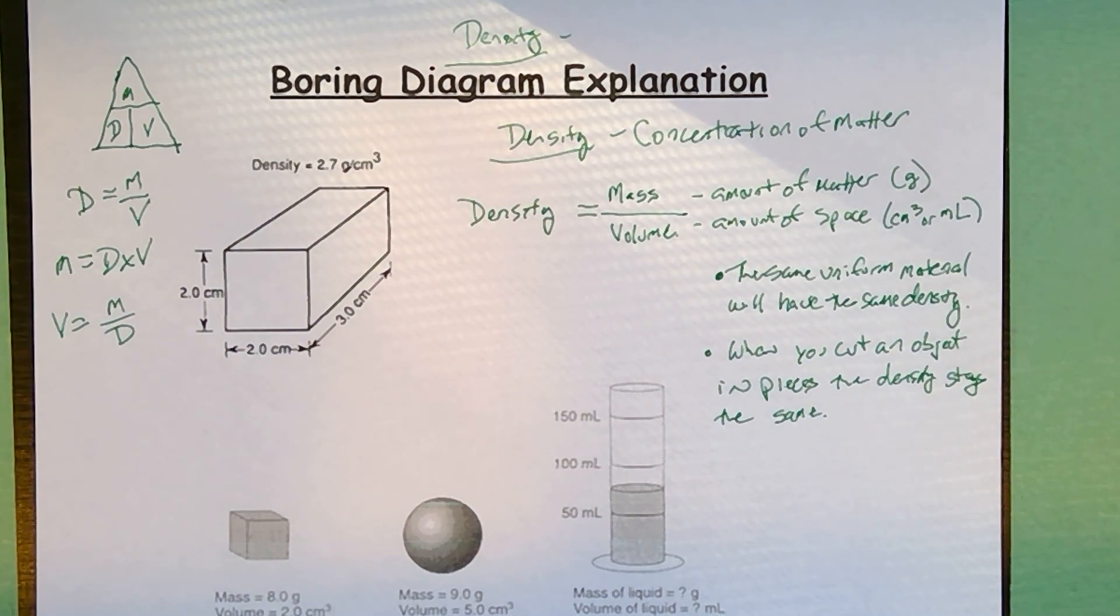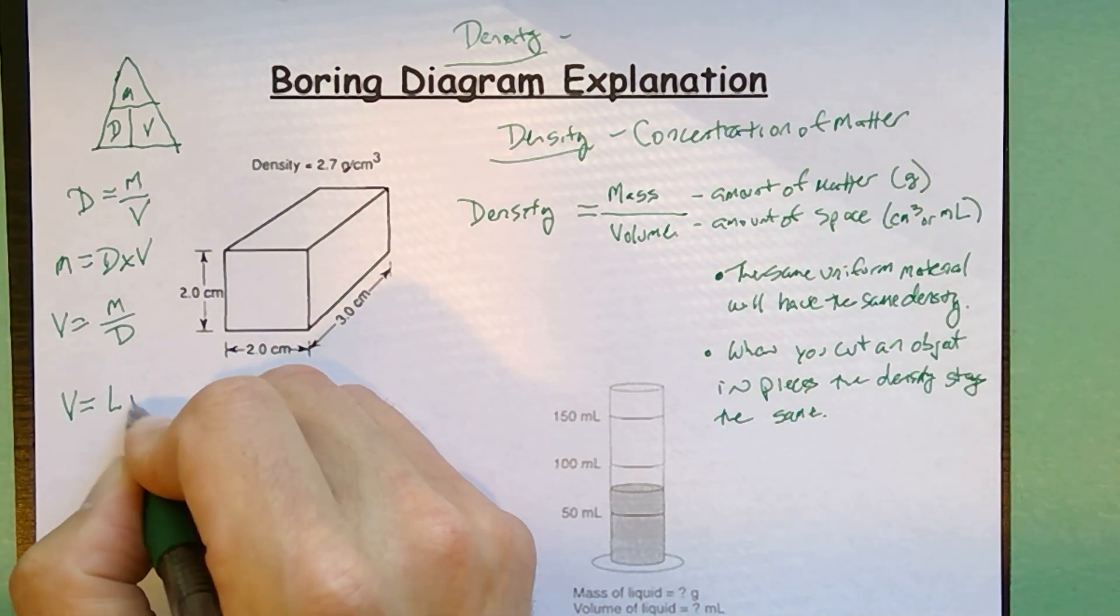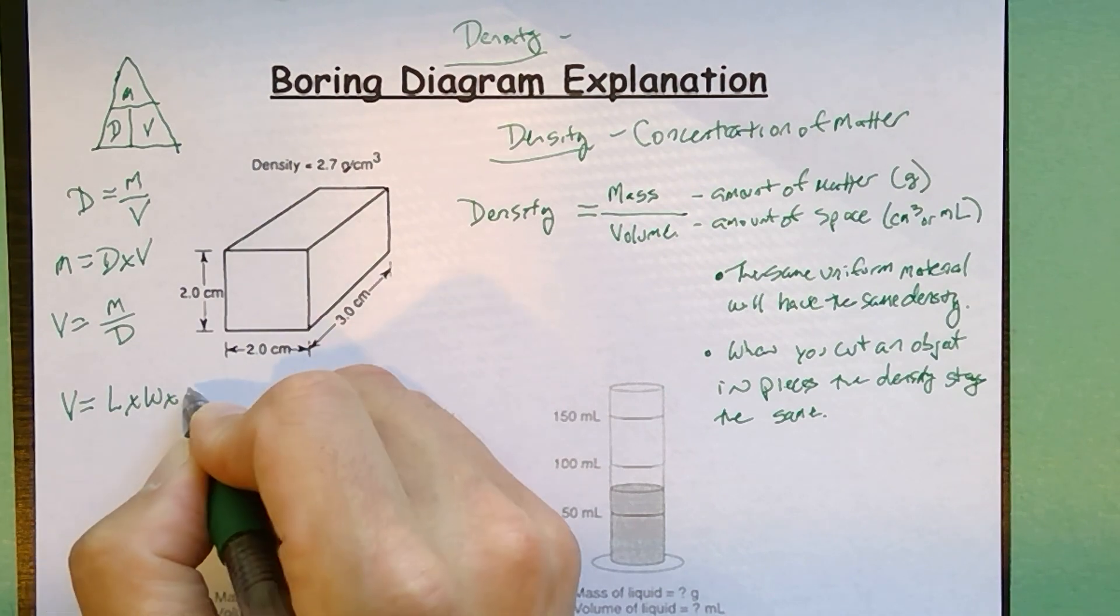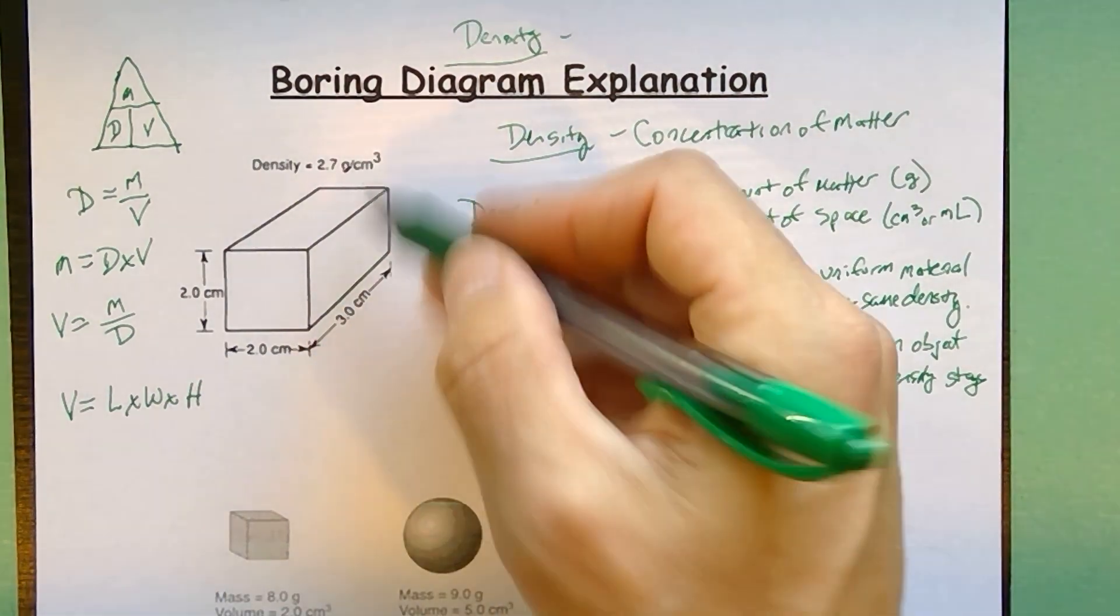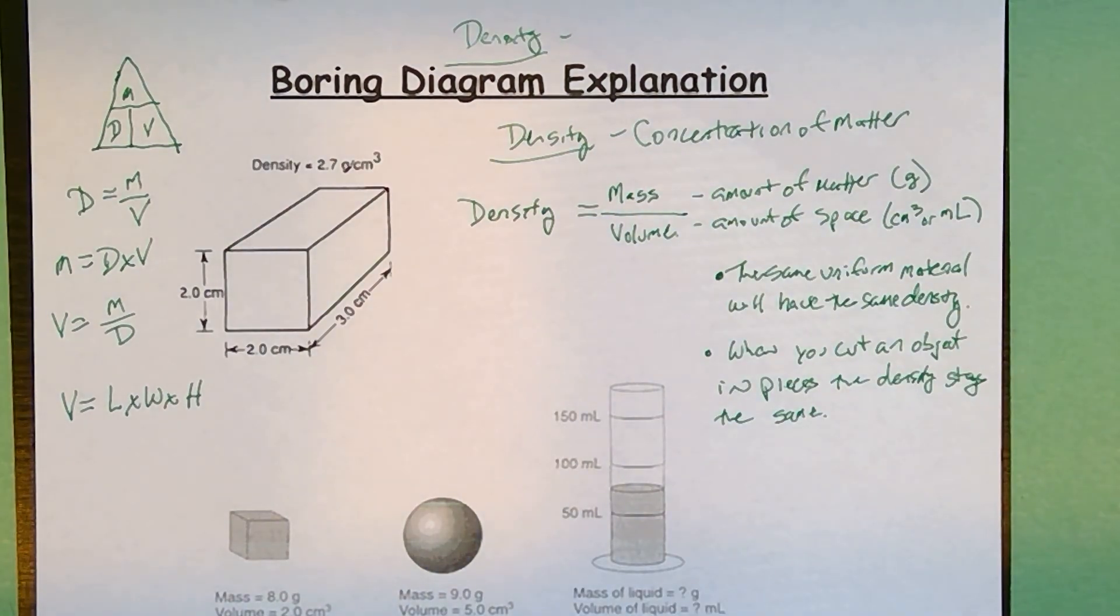Now looking at this, they're expecting you to know that if you have a regular rectangular prism that the formula is volume is equal to length times width times height. So in this diagram, they gave you the density. They gave you the dimensions. Obviously, they want you to calculate the mass. So why don't we go through this?